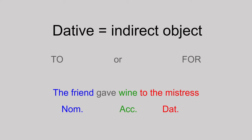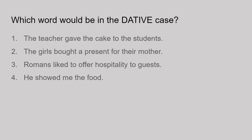Let's have a go at this concept in English to start with. Which word is in the dative case in these sentences? They get harder as you go along. Pause the video here if you want to have a go at finding the dative for each sentence. Number one: the teacher gave the cake to the students. The indirect object is the students. The teacher would be nominative, the cake is the accusative, and the students are dative.